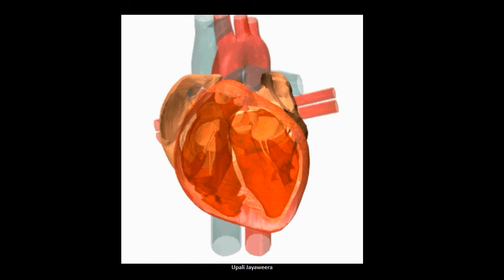This is the inner structure of the human heart. You can see the chambers of the heart, valves, arteries and veins.